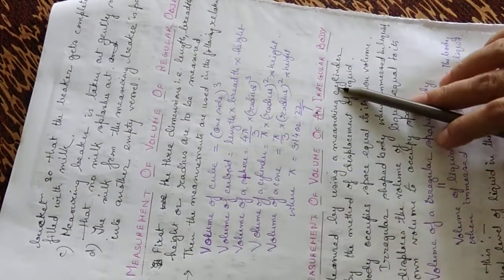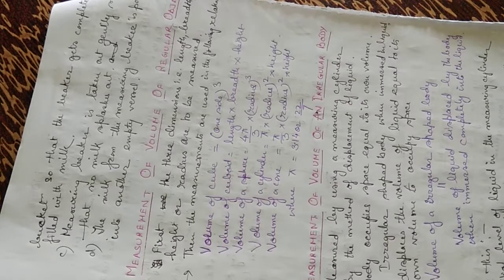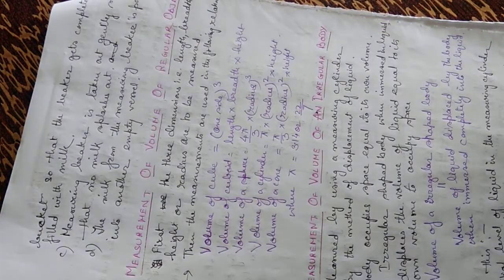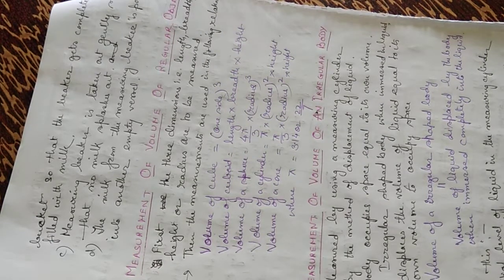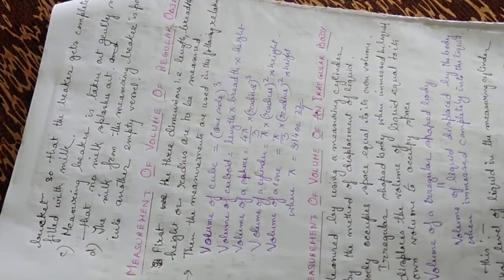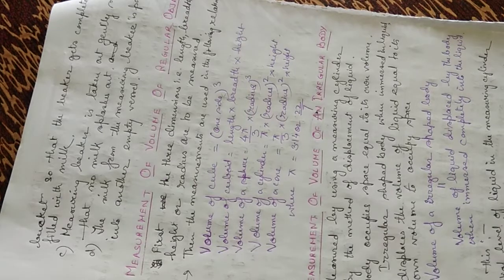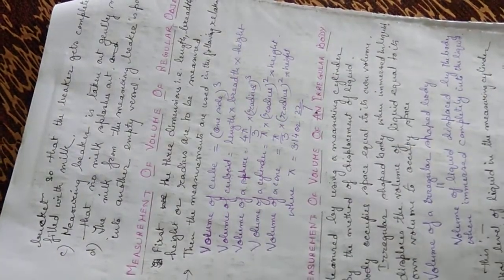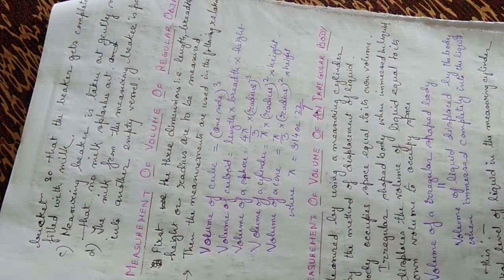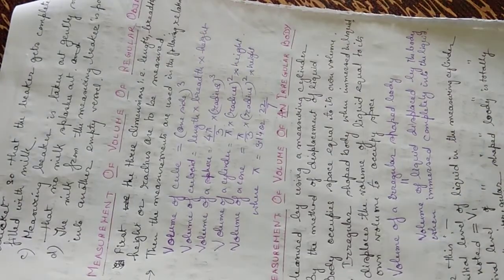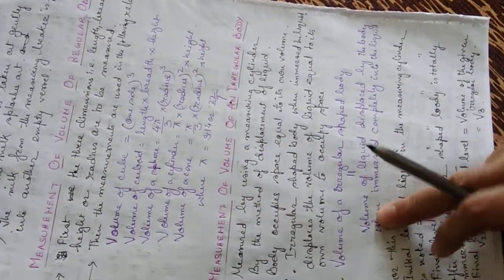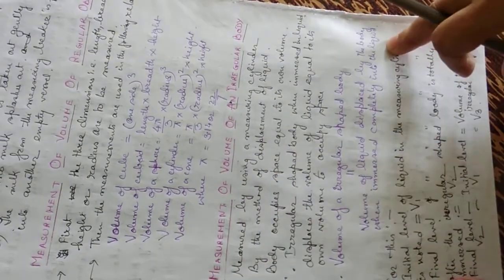Measurement of the volume of an irregular object is done using a measuring cylinder by the method of displacement of liquid. The body occupies space equal to its own volume when immersed in a liquid. Therefore, an irregular shaped body, when immersed in a liquid, displaces a volume of liquid equal to its own volume. So, volume of an irregular shaped body equals the volume of liquid displaced when it is completely immersed.